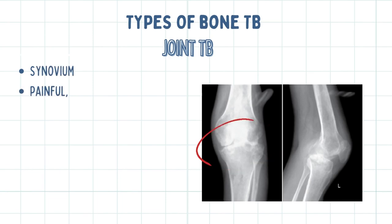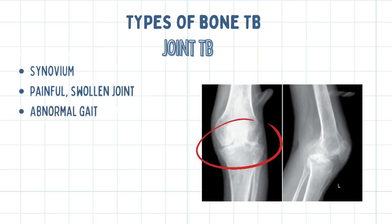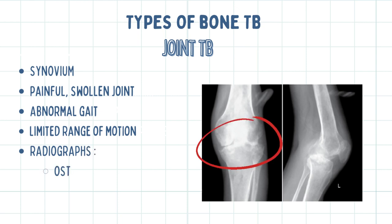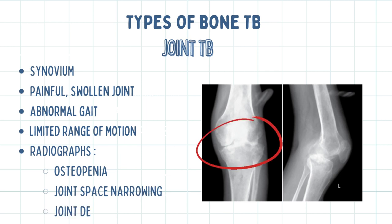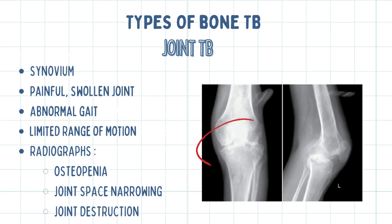With joint TB, the synovium is primarily affected and the patient presents with a painful, swollen joint due to chronic synovitis. If the hip is involved, the patient may present with an antalgic or Trendelenburg gait and limited range of motion. Features of chronic synovitis on radiographs include osteopenia with or without periarticular erosions, joint space narrowing, and joint destruction. This X-ray shows destructive tricompartmental arthritis with erosion of both femoral and tibial condyles along with periarticular osteopenia.